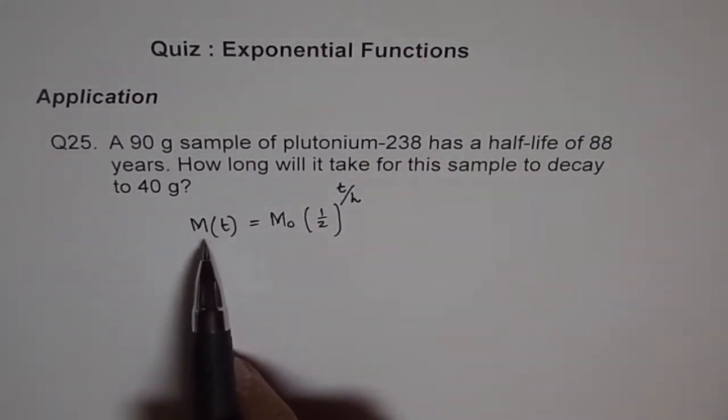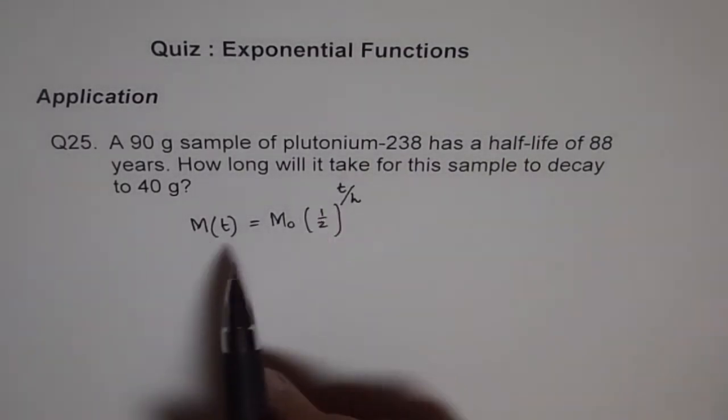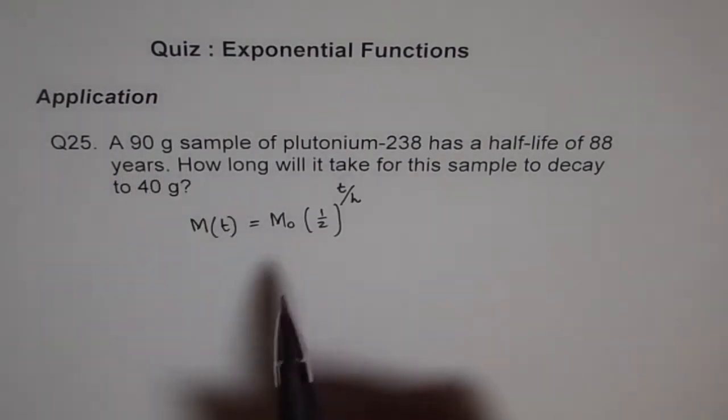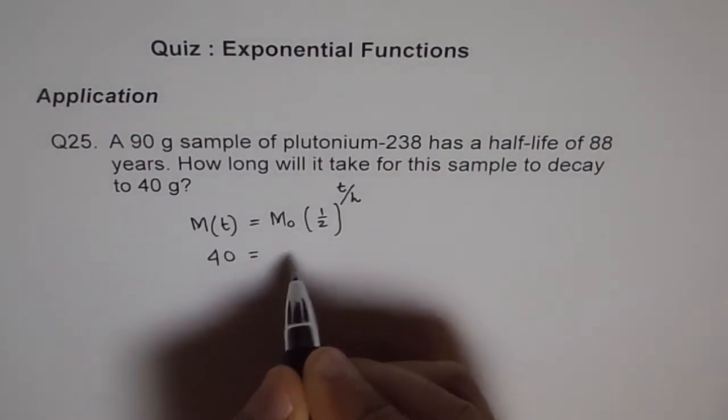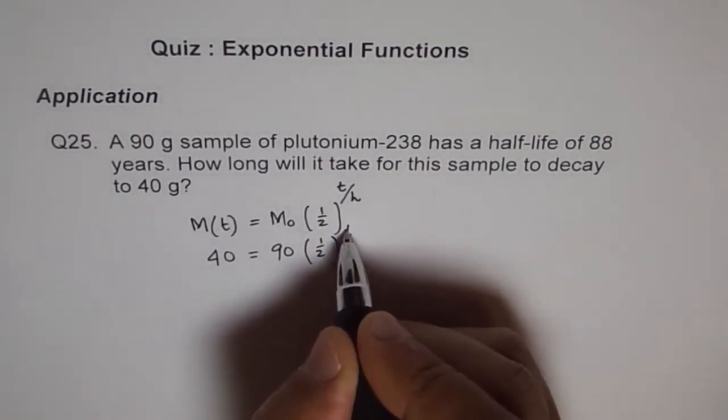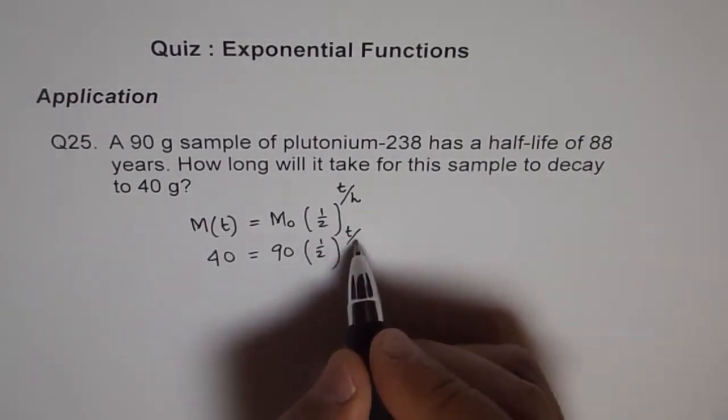Now here, we know we have to find the time when the mass remaining is 40 grams. We start with 90 grams of mass. So we can say 40 equals 90 times half to the power of T over half-life, which is 88 years.